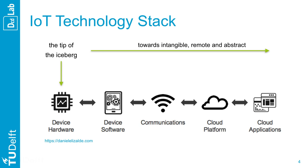It starts with the device hardware, which is the tip of the iceberg — concrete and tangible. From the left, we will go all the way to the right towards intangible, remote and abstract concepts. Intangible, as we move to a digital world without physical manifestation of what is happening. Remote, as many of the processes happen far from the physical product, distributed around the world. Abstract, as boundaries between elements become blurry.